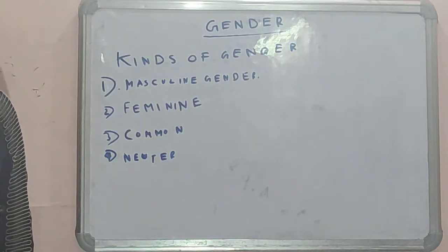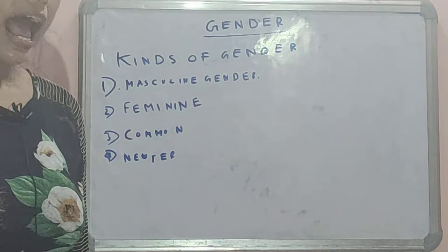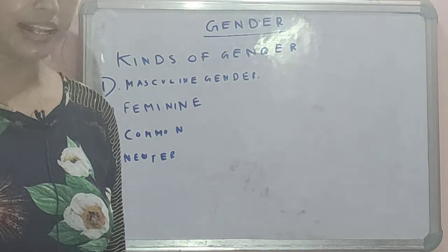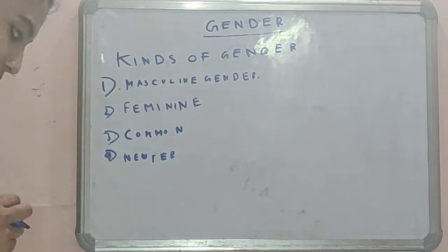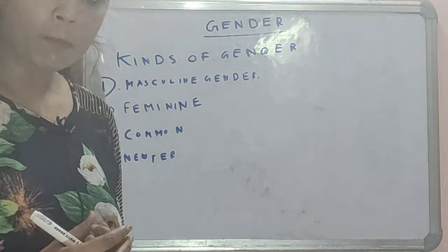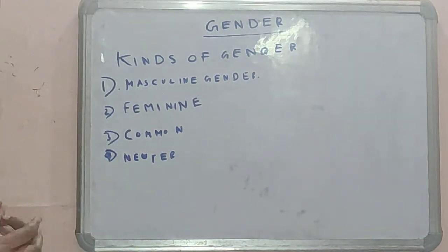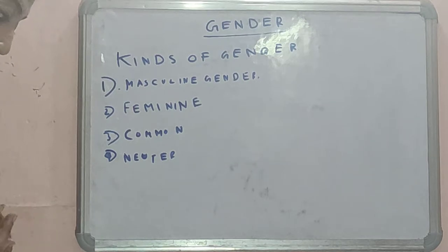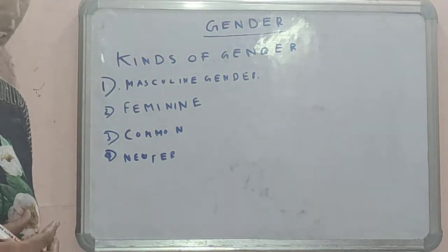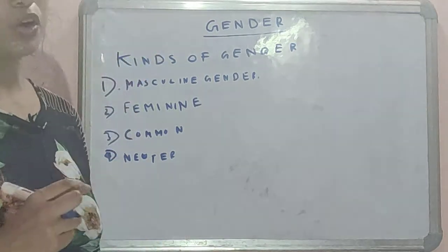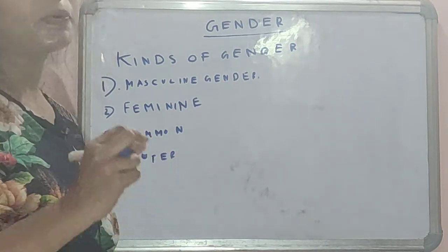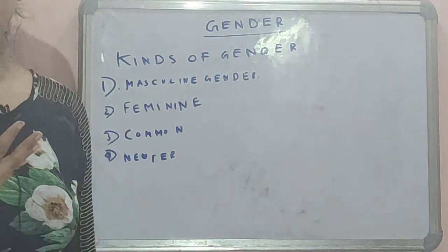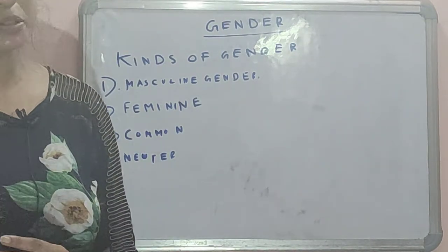There are some words which we can use in a gender-neutral way. For example, 'salesman', 'spokesman', 'chairman' — we can say saleswoman or spokeswoman, but 'salesperson', 'chairperson', and 'spokesperson' are preferred. Basically, by adding the word 'person', we are neither saying it is masculine or feminine. It means it can be anyone — a male or a female.